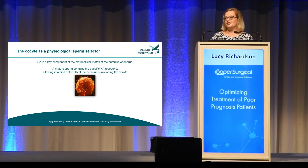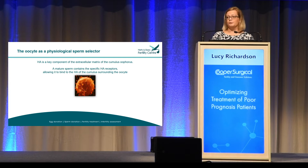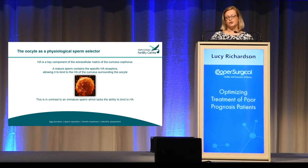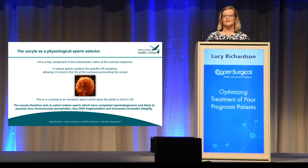If we look back to nature — and what better way to learn about what we're doing in the laboratory — we know that surrounding the oocyte there is HA expression. It's a key component of the extracellular matrix around the cumulus. The mature sperm, which have the receptors that can bind to this expression, are able to go on and fertilise the egg naturally. This is in contrast to an immature sperm — it hasn't formed those receptors, so it can't bind to the egg. The egg is almost acting as a physiological sperm selector, only allowing those mature sperm to bind.